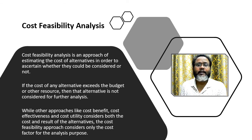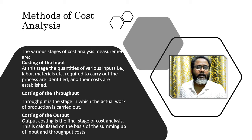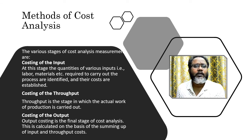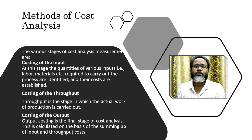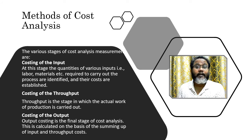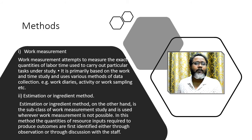The methods of costing include: costing of the input, costing the throughput, and costing of the output. At the input level, when you account for labour, materials, and capital infrastructure, that is the cost of input. Throughput is the cost involved while the program or project is ongoing — between the beginning point and the end point. Costing of output is the cost involved when you have got the outcome, the product, or the service. Work measurement attempts to measure the exact quantities of labour time used to carry out a particular task, primarily based on work and time study using various methods of data collection.